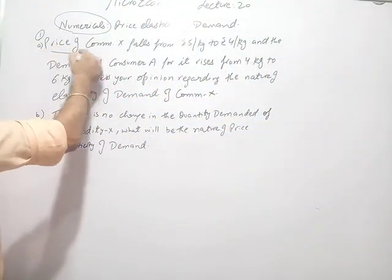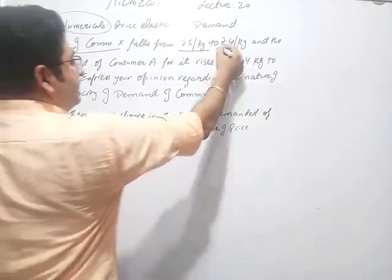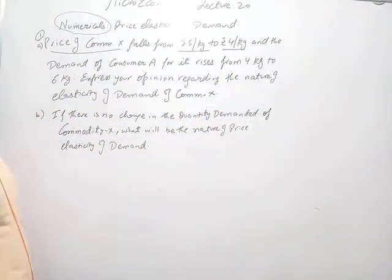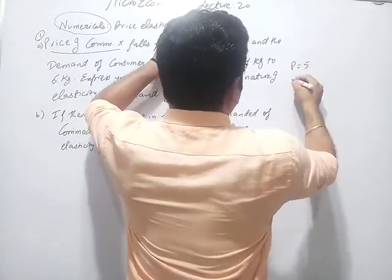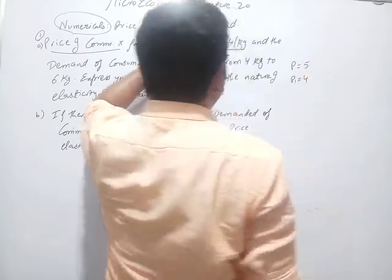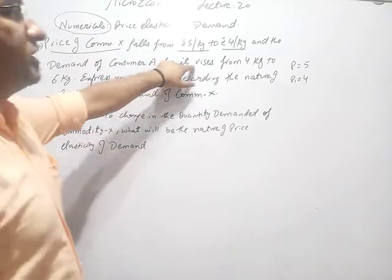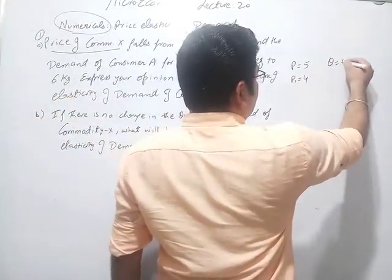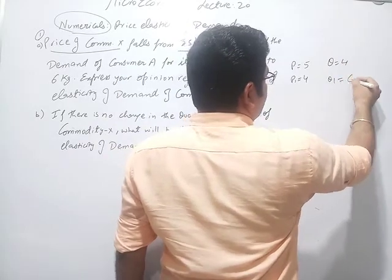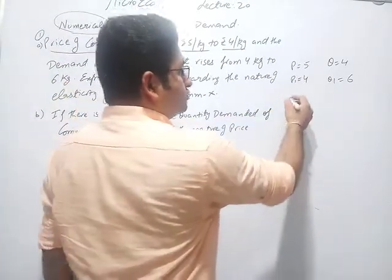The first question: the price of commodity X falls from Rs. 5 per kg to Rs. 4 per kg. Let us learn to draft the question — here P is equal to 5 and P1 is equal to 4. The demand of consumer A rises from 4 kg to 6 kg, so Q is equal to 4 and Q1 is equal to 6.